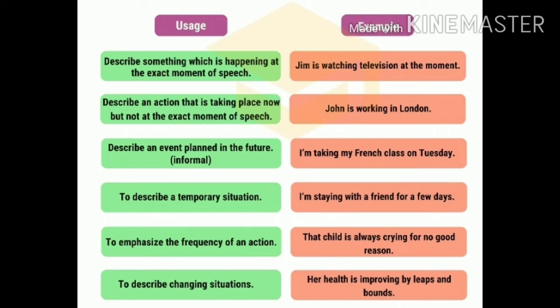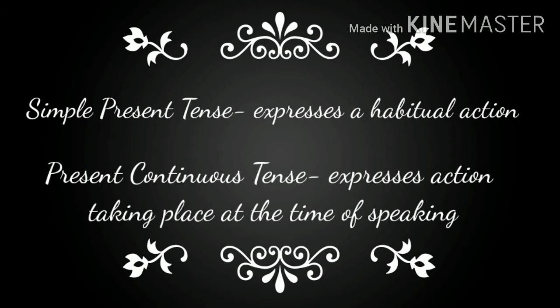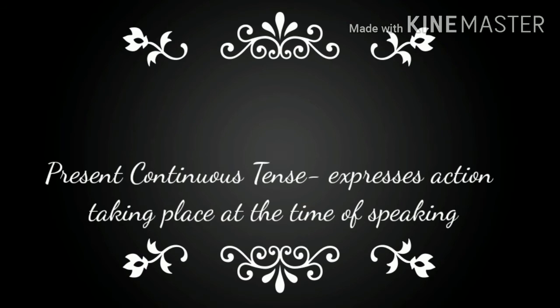The last use is to describe a changing situation — for example, 'Her health is improving by leaps and bounds.' To summarize: simple present tense is used to express a habitual action, while present continuous tense is used to express actions taking place at the time of speaking.